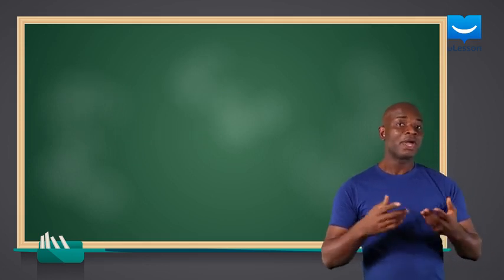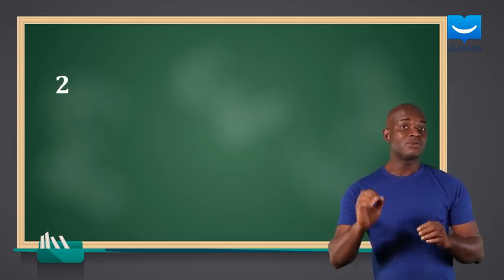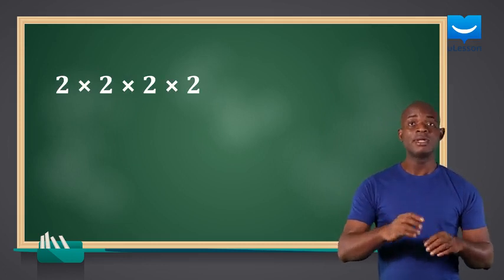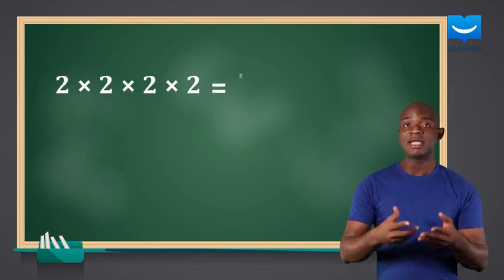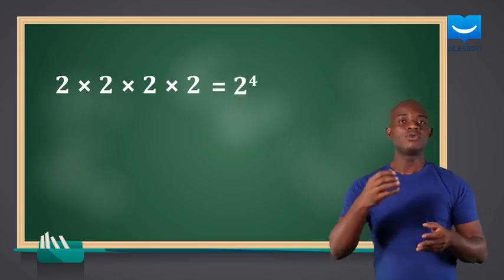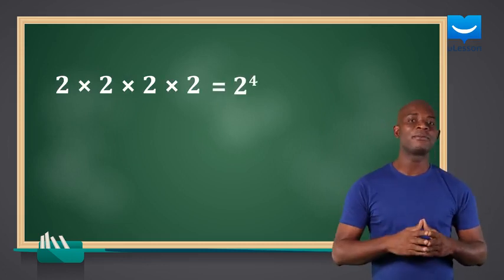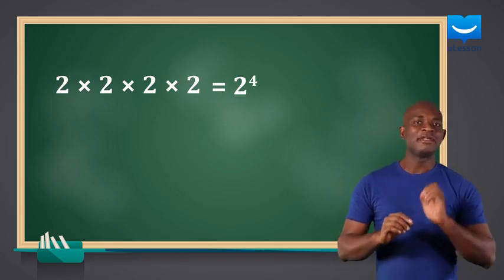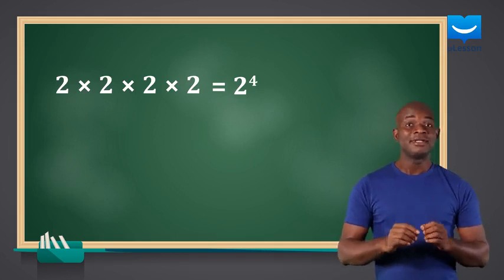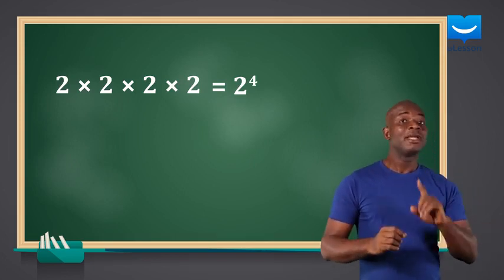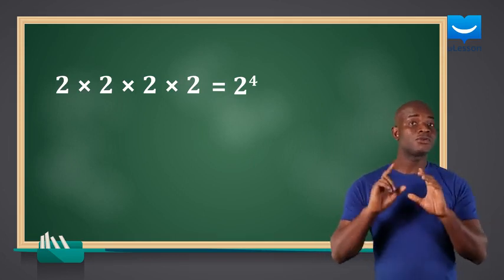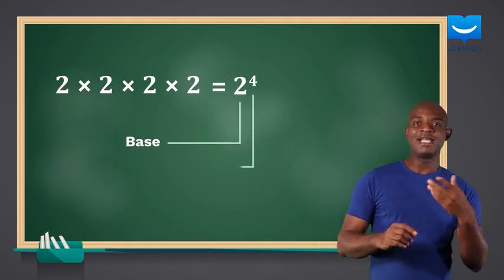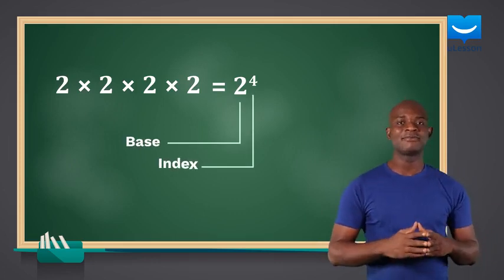Previously, we have seen that 2 times 2 times 2 times 2 can be expressed as 2 to the power of 4. Now we know what this is called — it is the index form. Here, 2 is the base while 4 is the index.